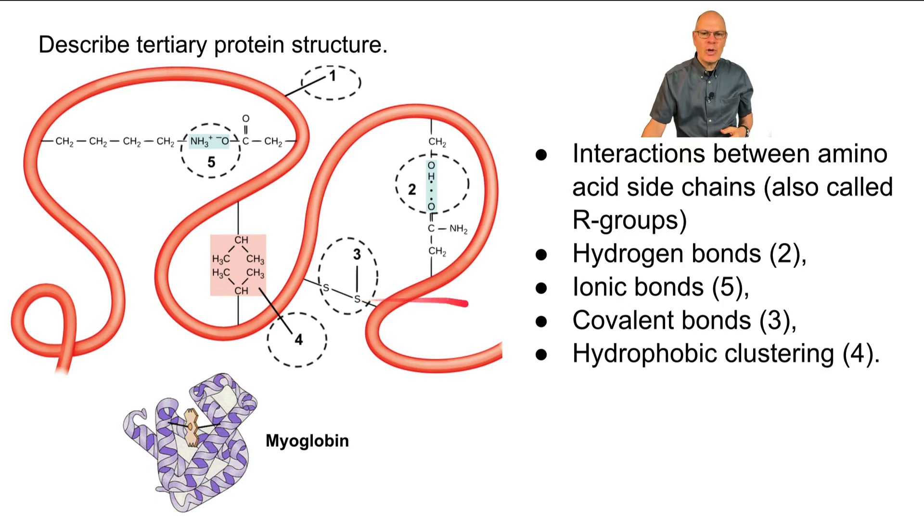And then finally, you have what's called hydrophobic clustering, where nonpolar side chains will cluster together, avoiding water. So down here, you see myoglobin, which is an oxygen storing protein that's found within muscle tissue. That's a tertiary protein folded into a specific shape. And you can see like over here, there's a whole bunch of alpha helices that are in that structure.